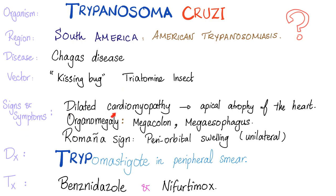Signs and symptoms: dilated cardiomyopathy with apical atrophy of the heart — the heart apex is gone. Organomegaly: megacolon, megaesophagus, splenomegaly, cardiomegaly, etc. Also, the Romania sign, which is unilateral periorbital swelling.